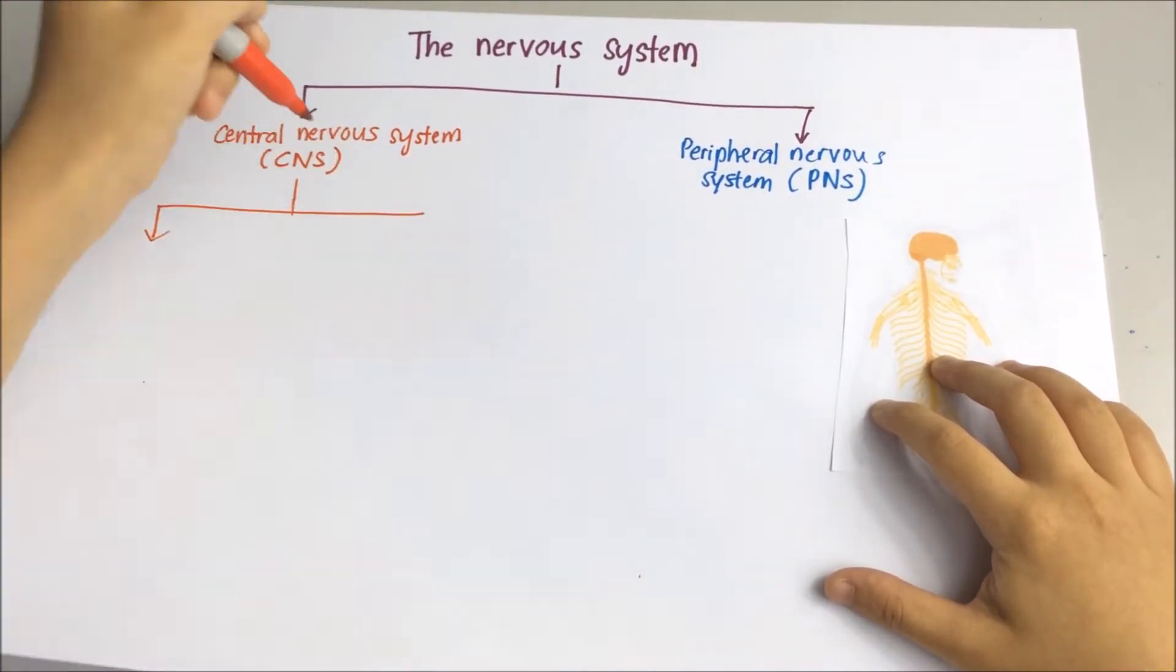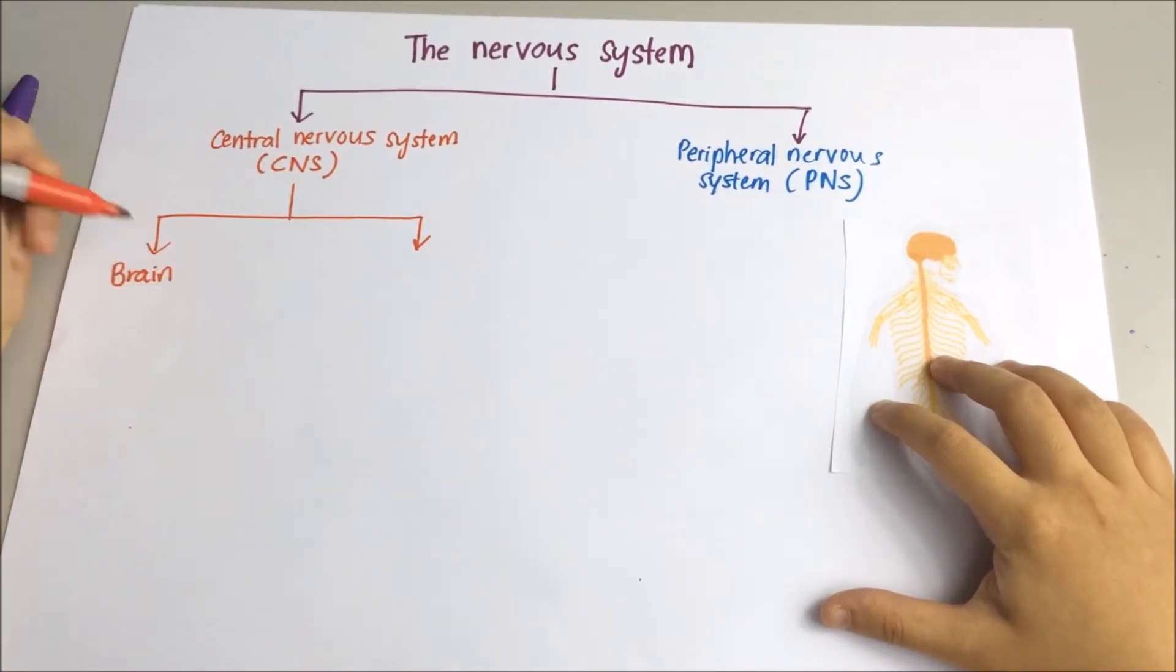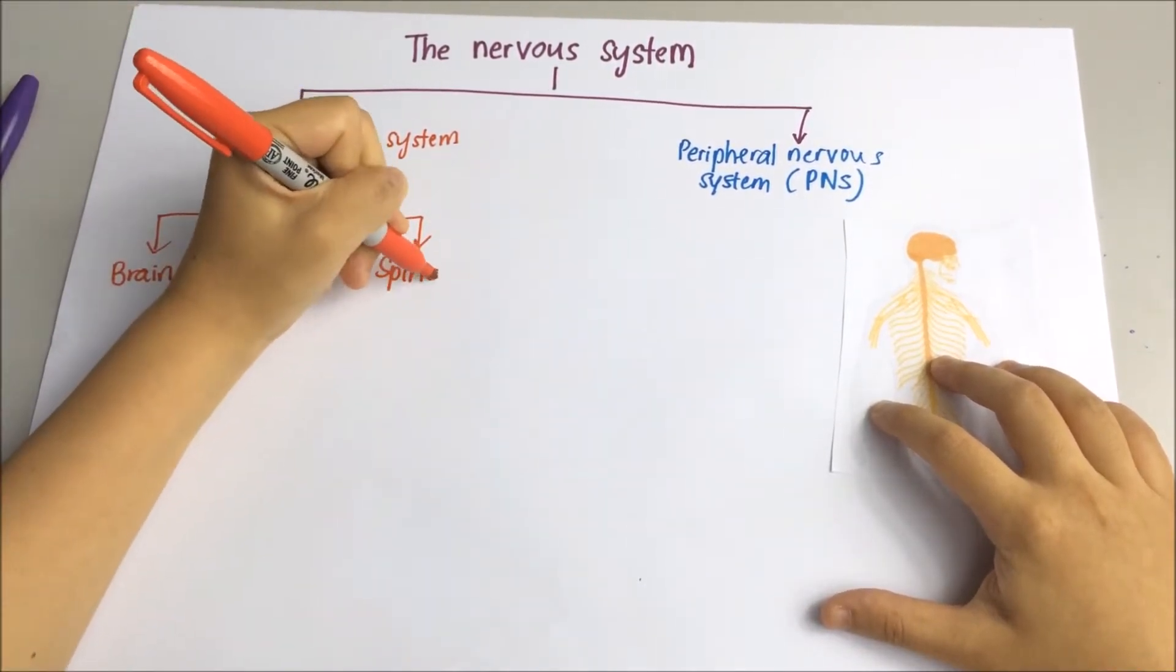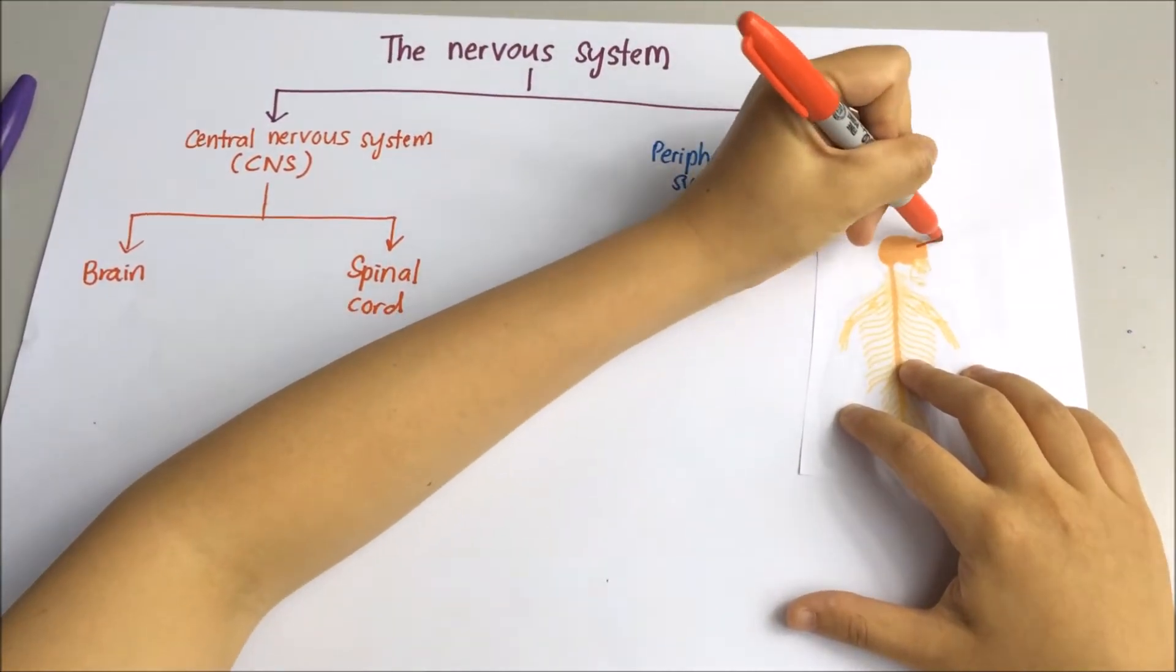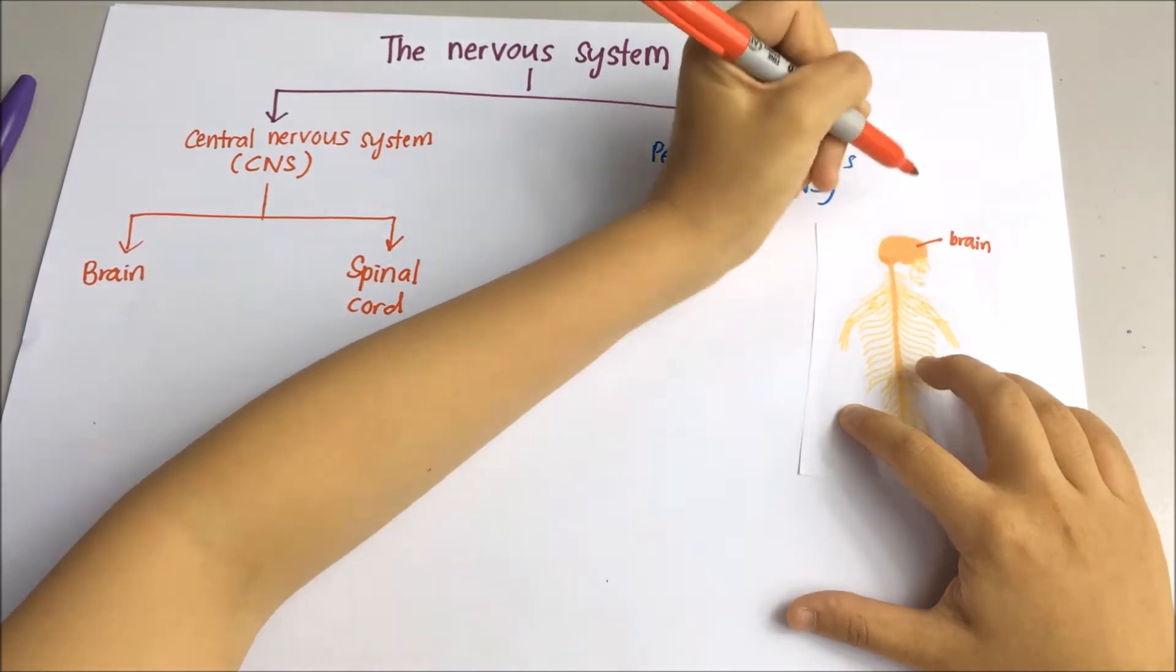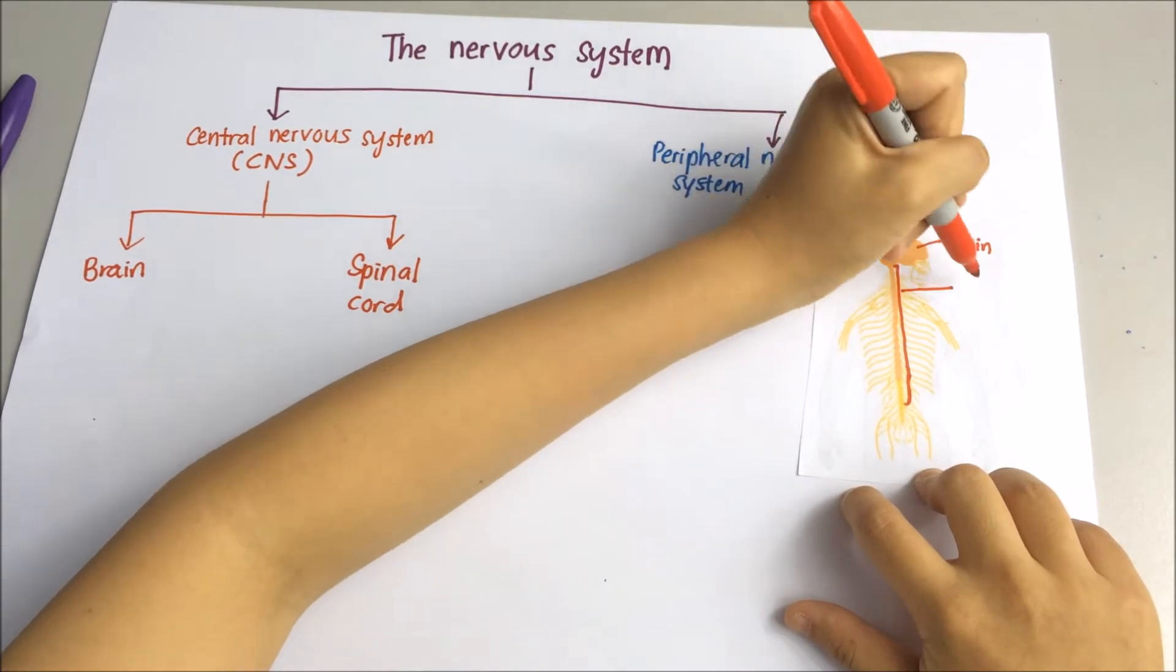Central nervous system includes the brain and also the spinal cord. Human brain weighs about 3 pounds. It has many folds and grooves.